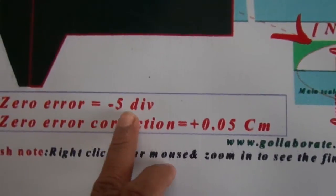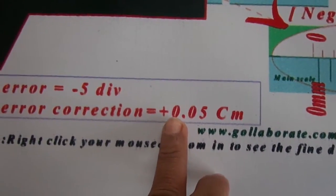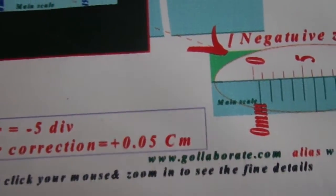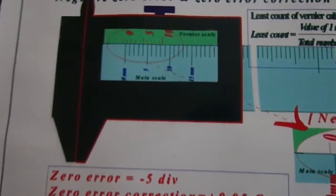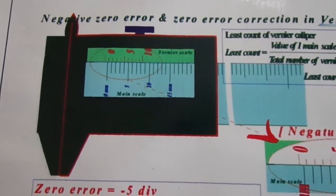Every time I add plus 0.05 centimeter from the Vernier to rectify that error. So that was about negative zero error and its error correction. Thanks all of you.